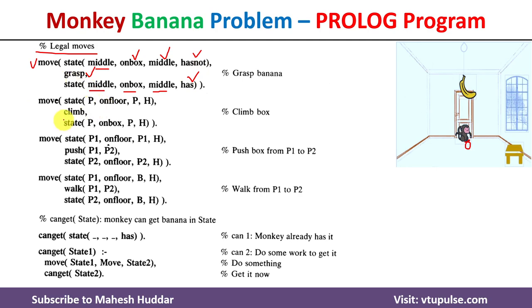The second move is climb. To execute climb, the monkey should be present on the floor, and both the monkey and the box should be present at the same position, that is P. Once the climb is executed, the position of the monkey and box horizontally will not change. What will change is that the monkey was present on the floor and now it will be present on the box. That is the only thing that changes.